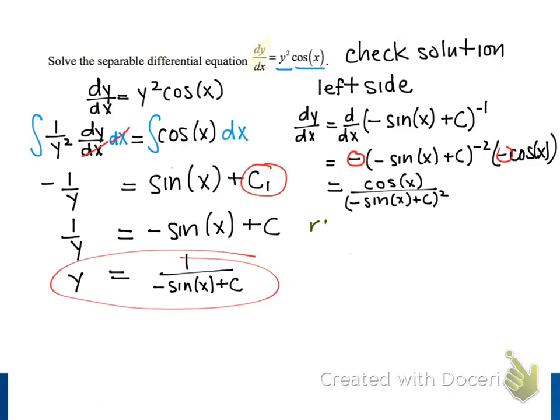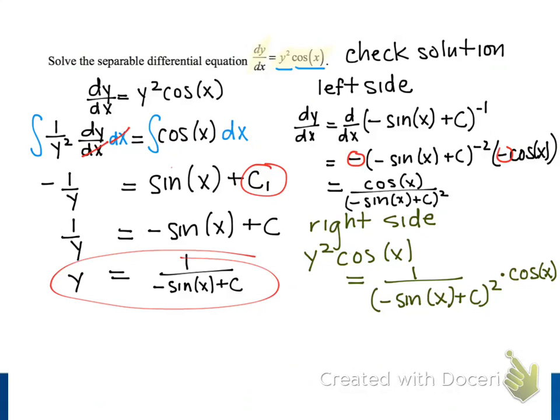Now we're going to consider the right side of our differential equation using our solution for y. To evaluate y squared cosine of x, we simply substitute our solution for y and square it, and then we multiply by cosine of x. When we rewrite this fraction, we see that it is the same as our result for the left side that we found above.